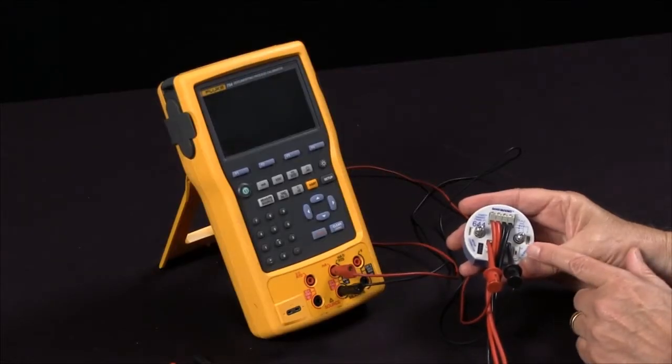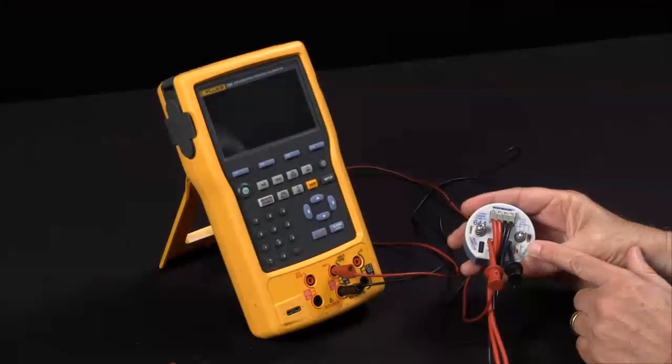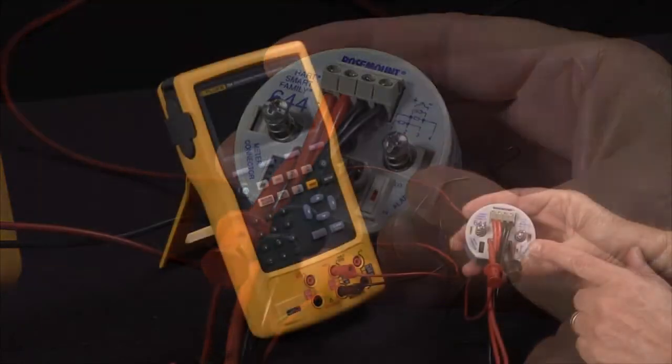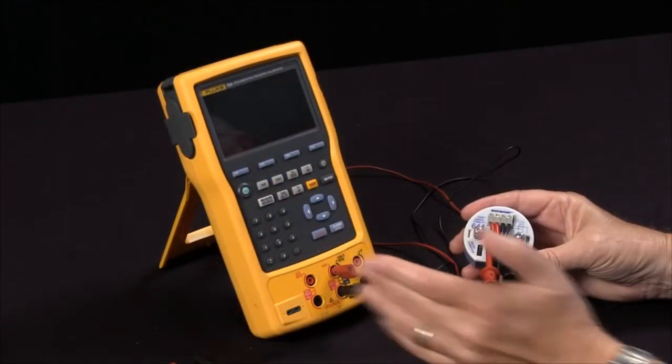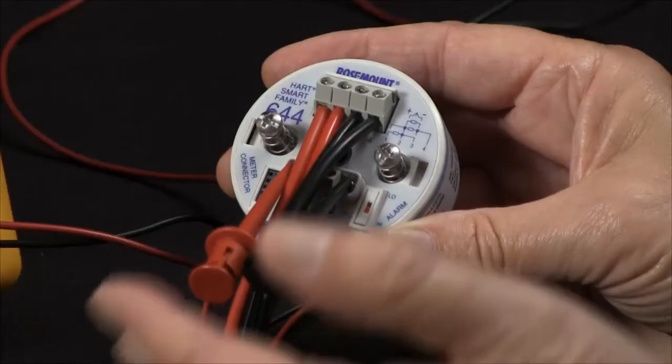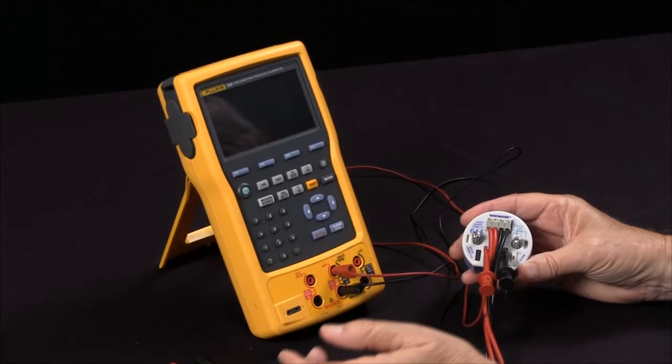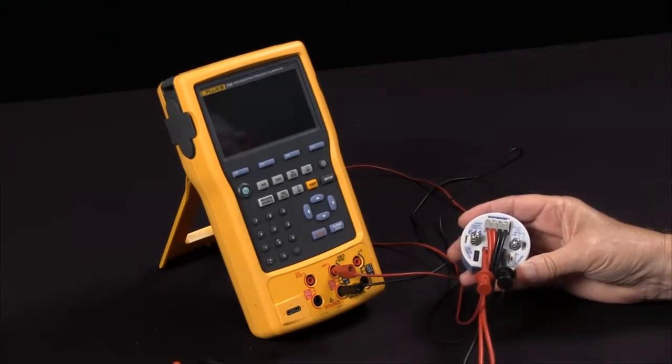We have a four-wire platinum 100 ohm RTD transmitter that we're going to be using today. We're going to use the Fluke 754 documenting process calibrator to source RTD to this transmitter and let it measure it. You'll notice that it's configured as a four-wire device, so we bring the four wires out and jump them together to the end with stackable connectors.